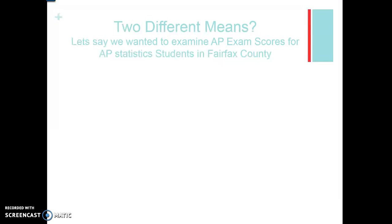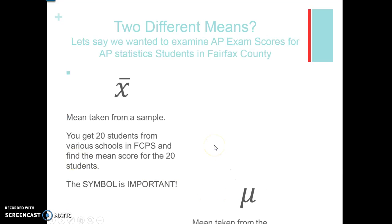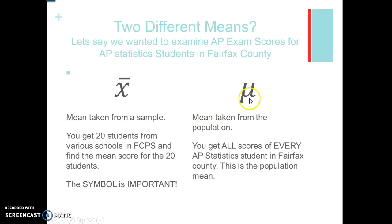There are two different means. If we wanted to examine AP exam scores for AP Statistics in Fairfax County, we'd discuss two means. The first is x-bar, a mean taken from a sample — for example, getting 20 students from various FCPS schools and finding their mean score. Notation is really important: x-bar specifically tells us it was not the entire population. The other kind of mean is taken from the population and is denoted as the Greek letter mu. That would be getting all scores of every AP Statistics student in Fairfax County. We define what our population is — in this case, all AP Statistics students in Fairfax County.